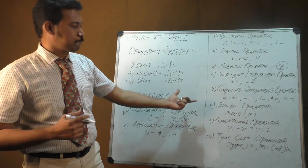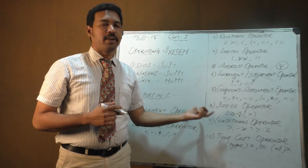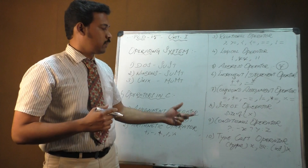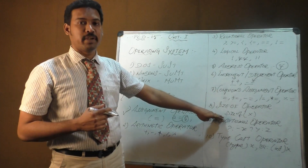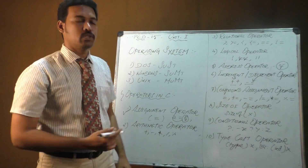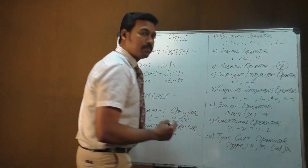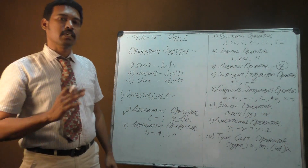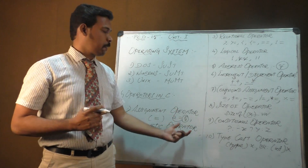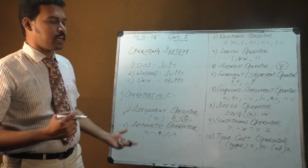The eighth is the sizeof operator, used in C to find the size of a particular data type or variable. The keyword used is sizeof, and you pass the variable name in brackets — sizeof(variable_name) — to identify the size of that variable.